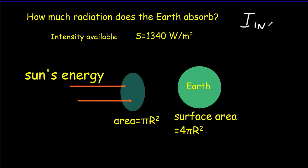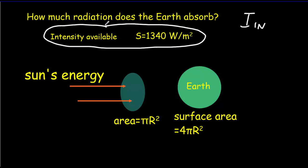Let's start by considering the input intensity. The first thing we want to think about is the intensity available from the Sun — that solar constant we talked about before. There's about 1340 watts per meter squared striking the top of the atmosphere where the rays from the Sun are striking directly.